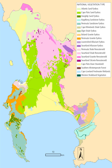Floristic region. The city of Cape Town lies within the Cape Floristic Kingdom, by far the smallest and most diverse of the Earth's six floristic kingdoms.